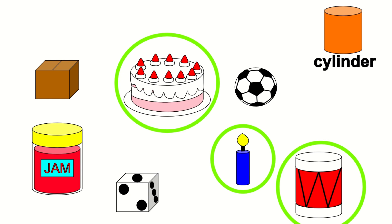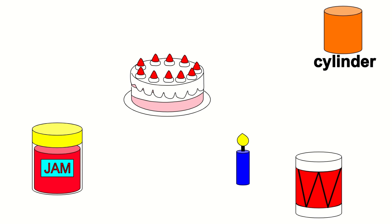What else is shaped like a cylinder? The jar of jam is shaped like a cylinder. We found all the things that are shaped like a cylinder.